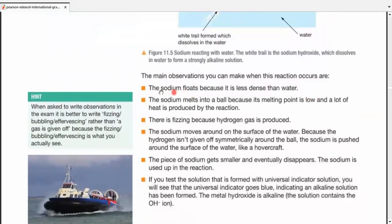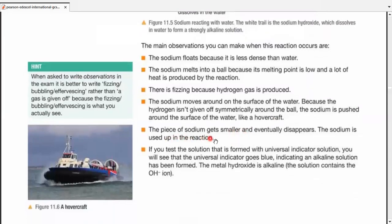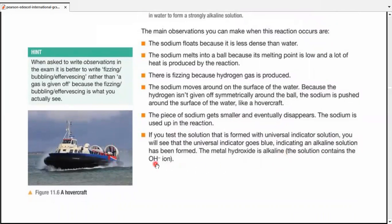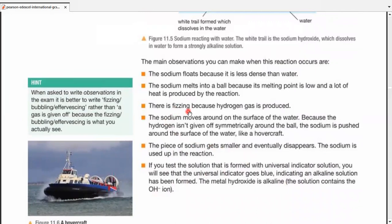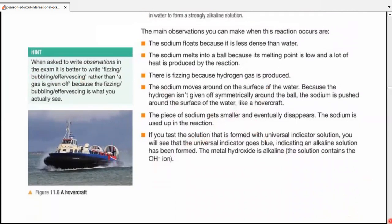The main observations which you can make. Sodium floats because of being less dense than water. Sodium melts into a ball because the melting point is low, and a lot of heat is produced by the reaction. Then there is fizzing because the gas is being produced, hydrogen. The sodium moves around the surface of water because hydrogen isn't given off symmetrically around the ball. The sodium is pushed around the surface of the water like a hovercraft. The piece of sodium gets smaller and eventually disappears because sodium is used up in the reaction, converted into alkali and hydrogen. And lastly, if you test the solution with universal indicator, you would see that the color goes blue, predicting that it produces an alkaline solution having OH- ions. We can always use the word fizzing for the gas produced, but you may write bubbling or effervescence, whatever you actually see. This all means almost the same.